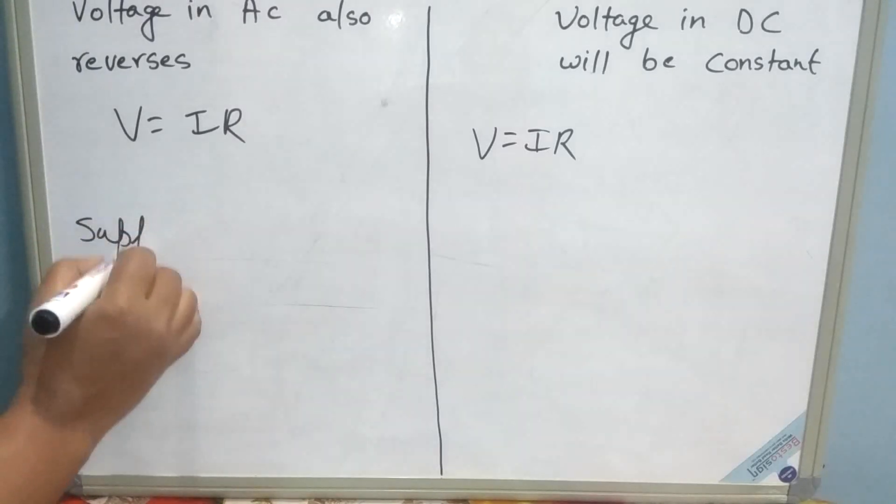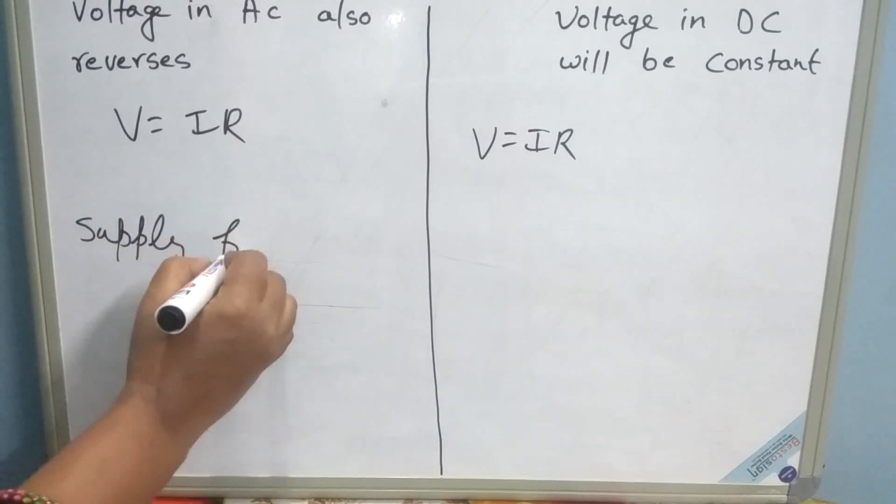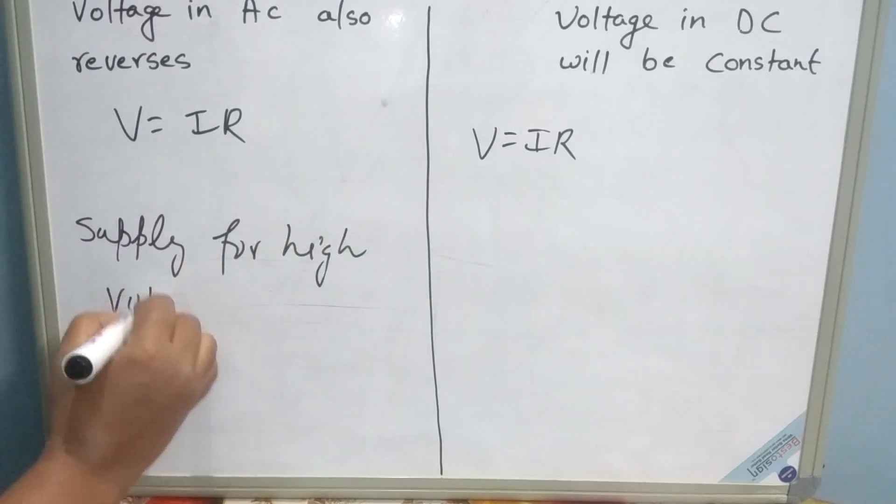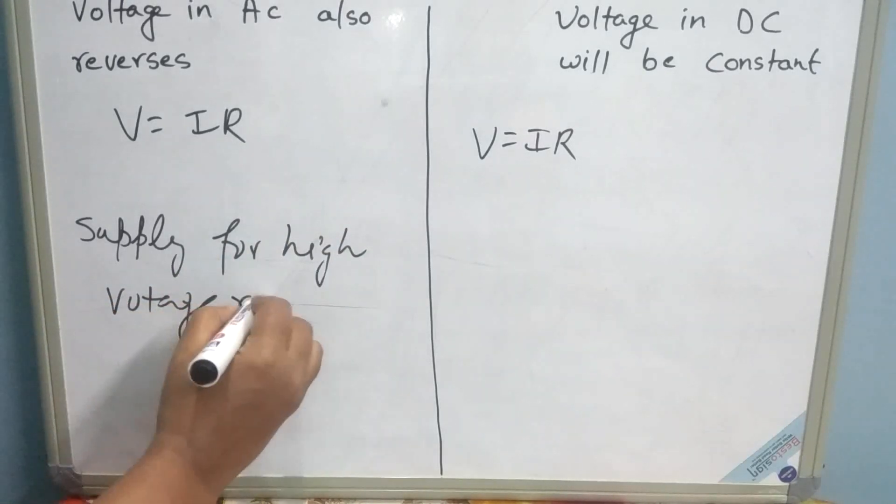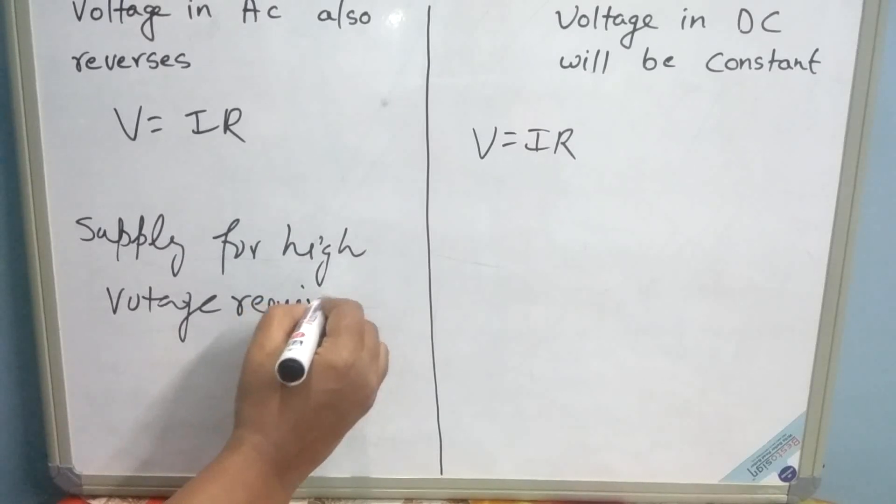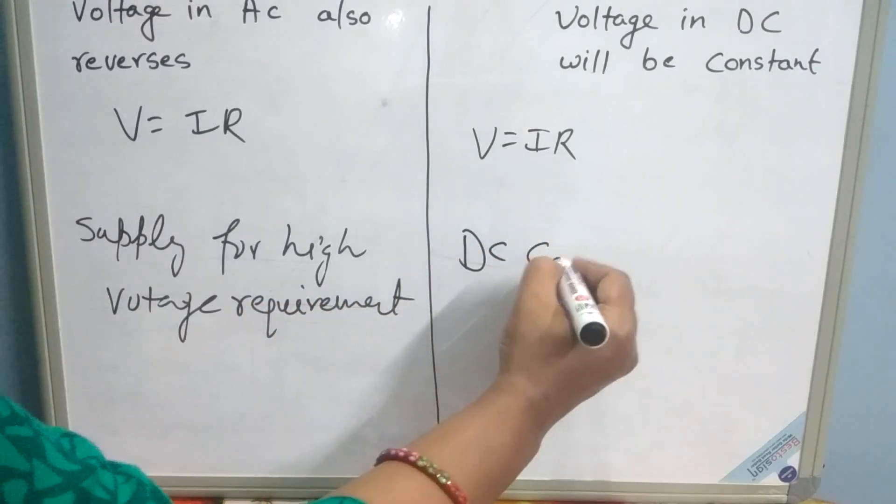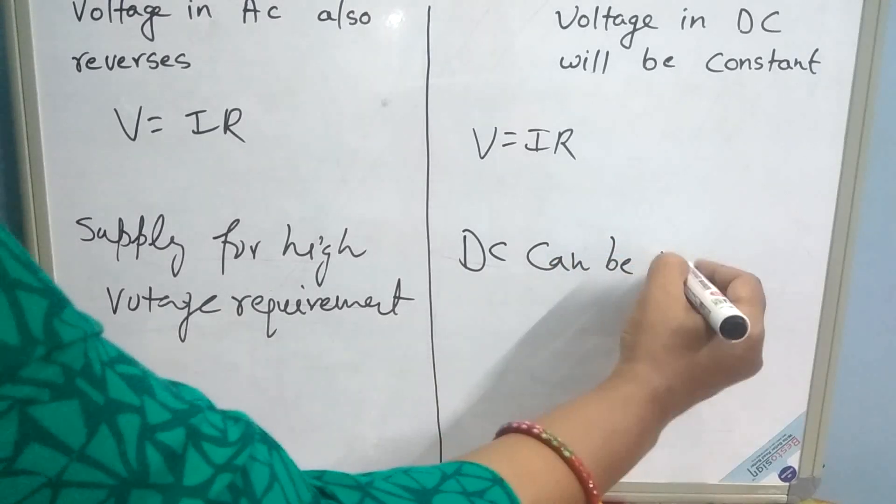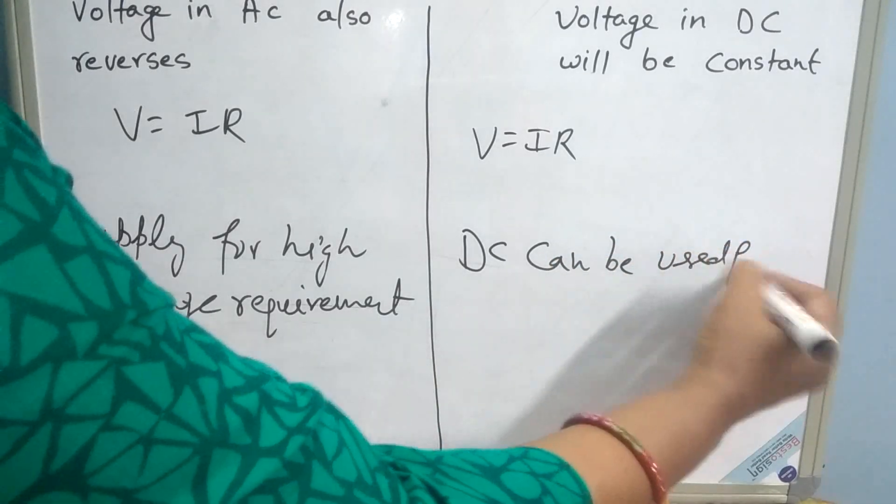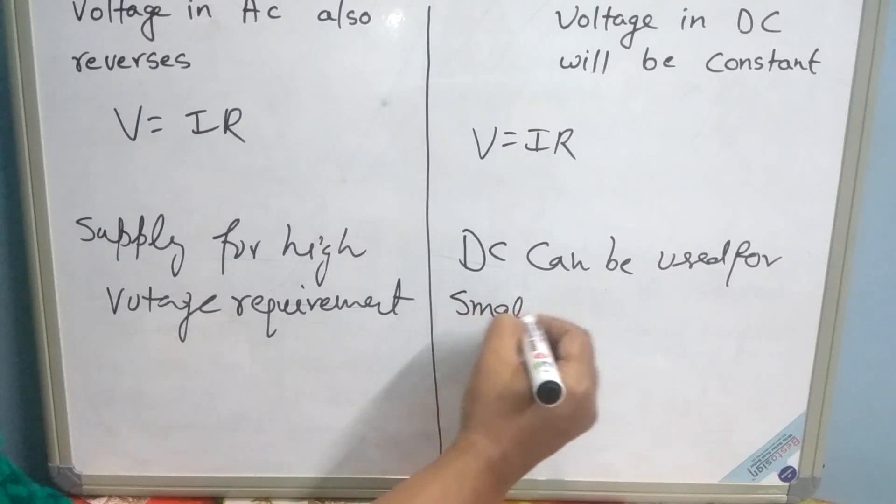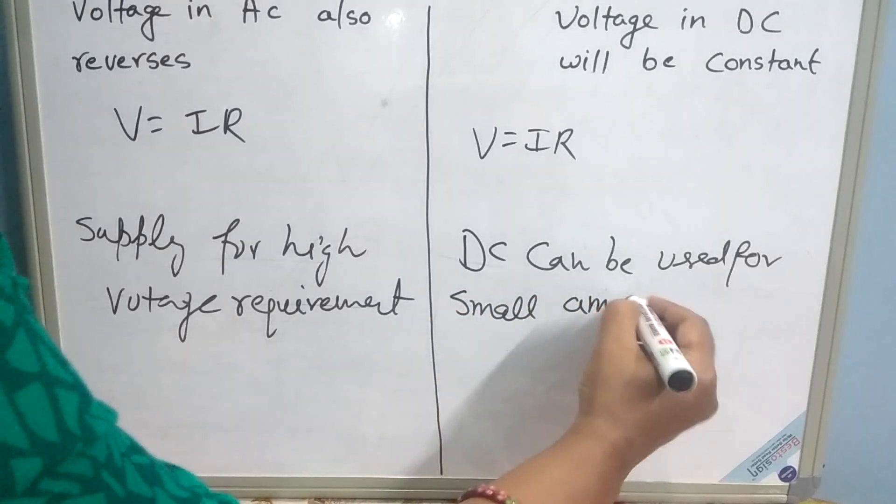Another difference in AC and DC is AC supply for high voltage requirement, whereas DC can be used for small amount of voltage.